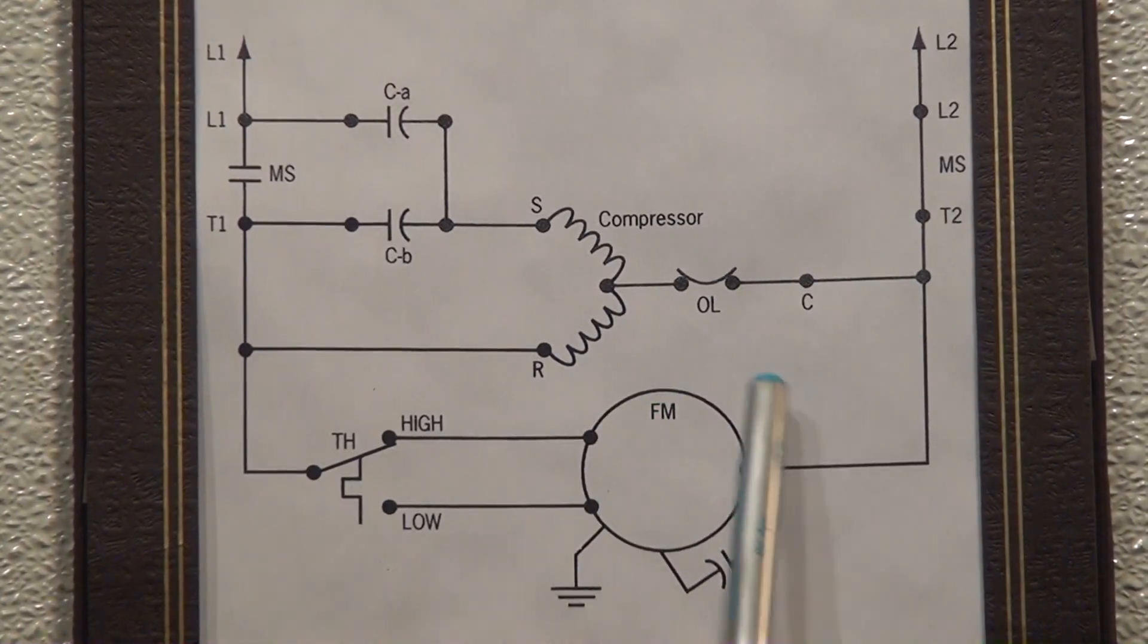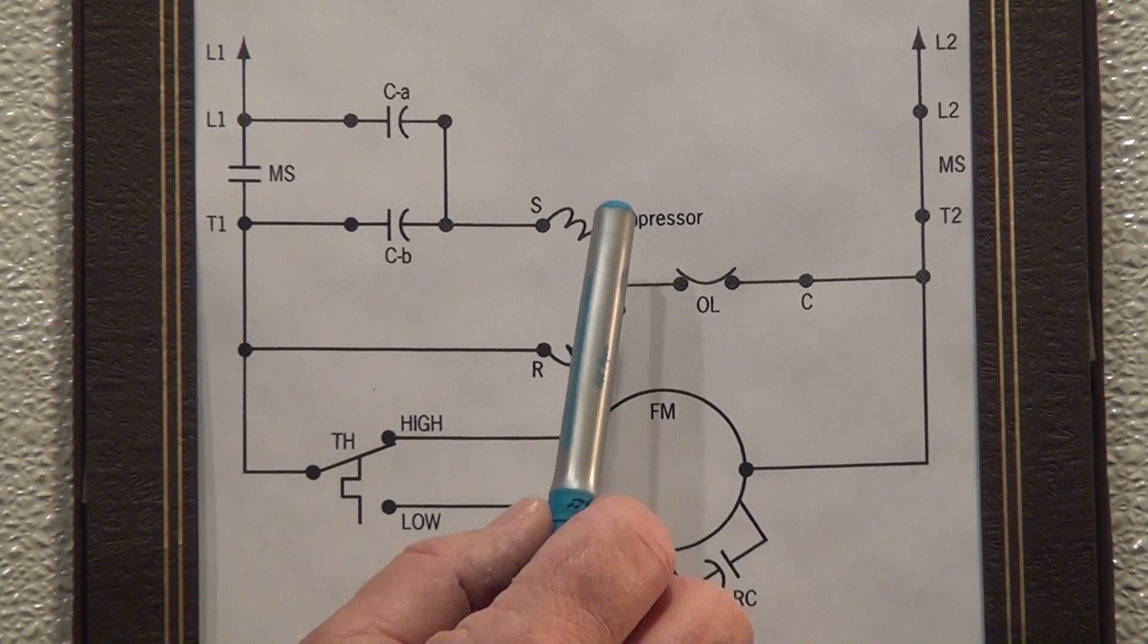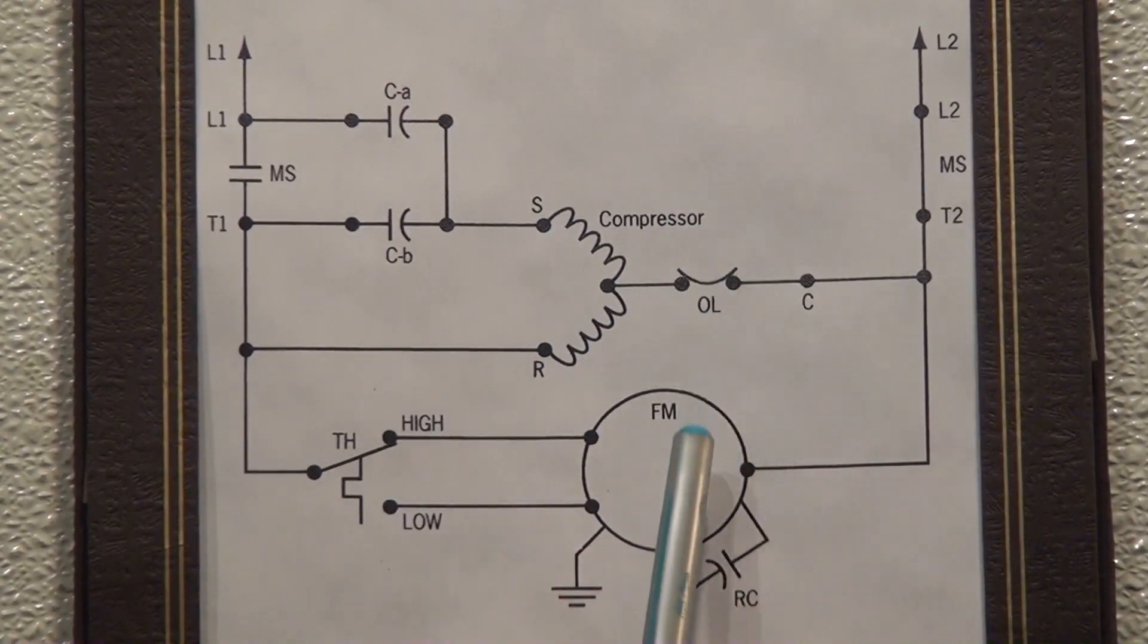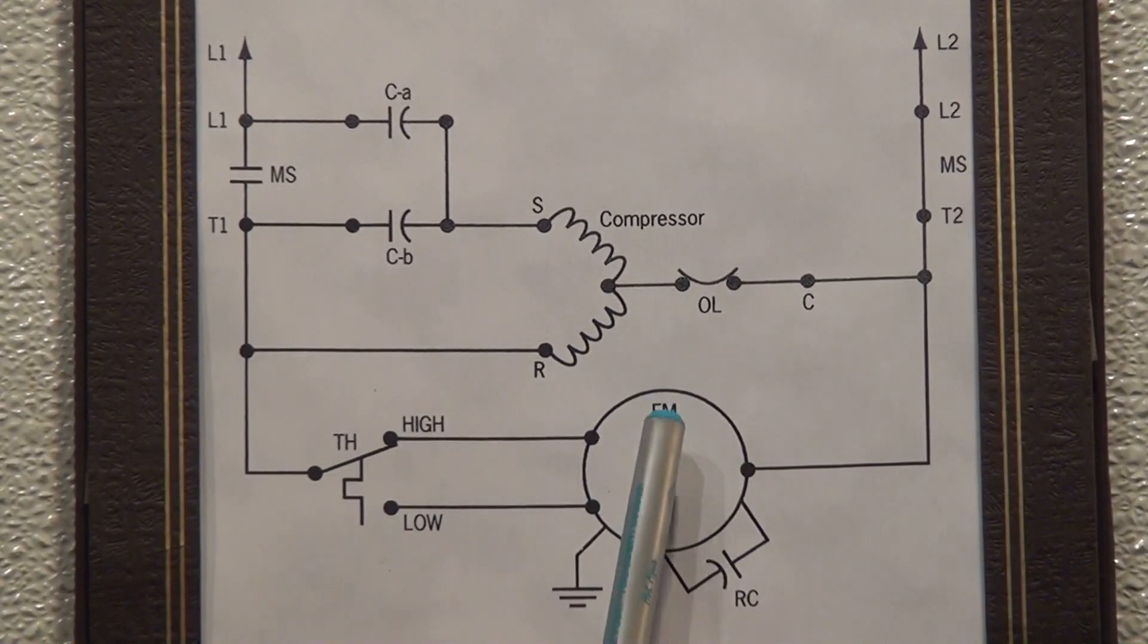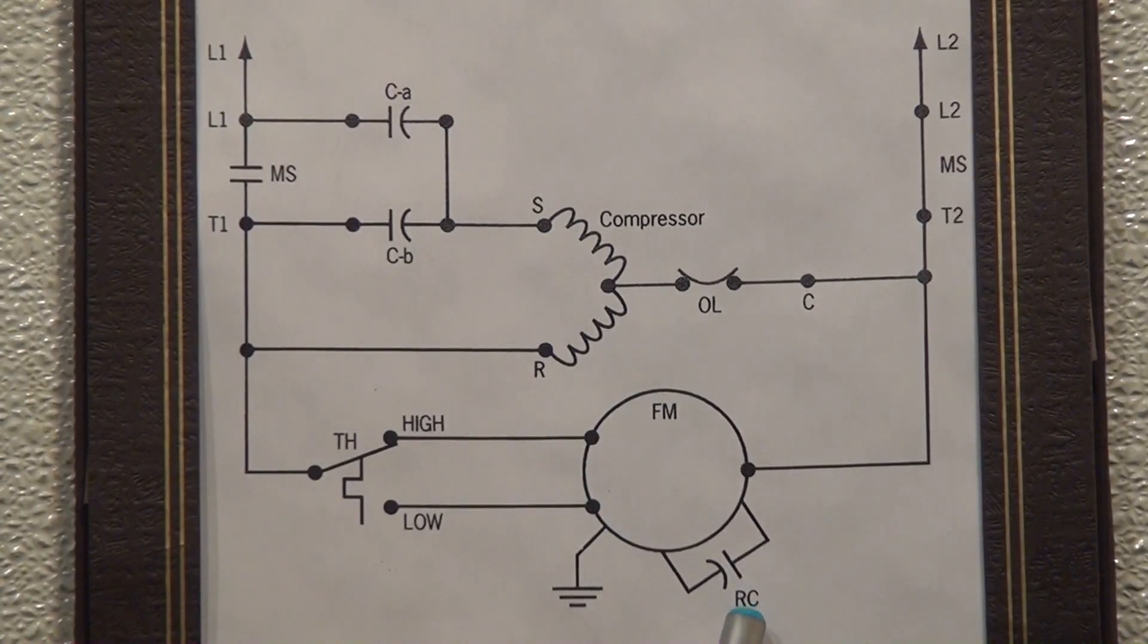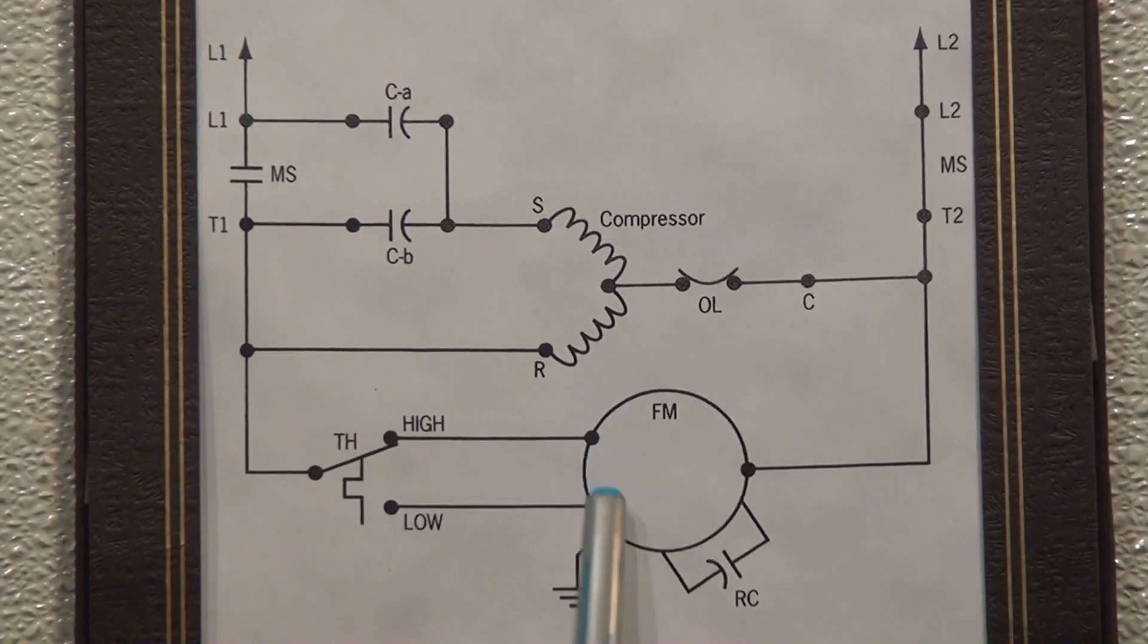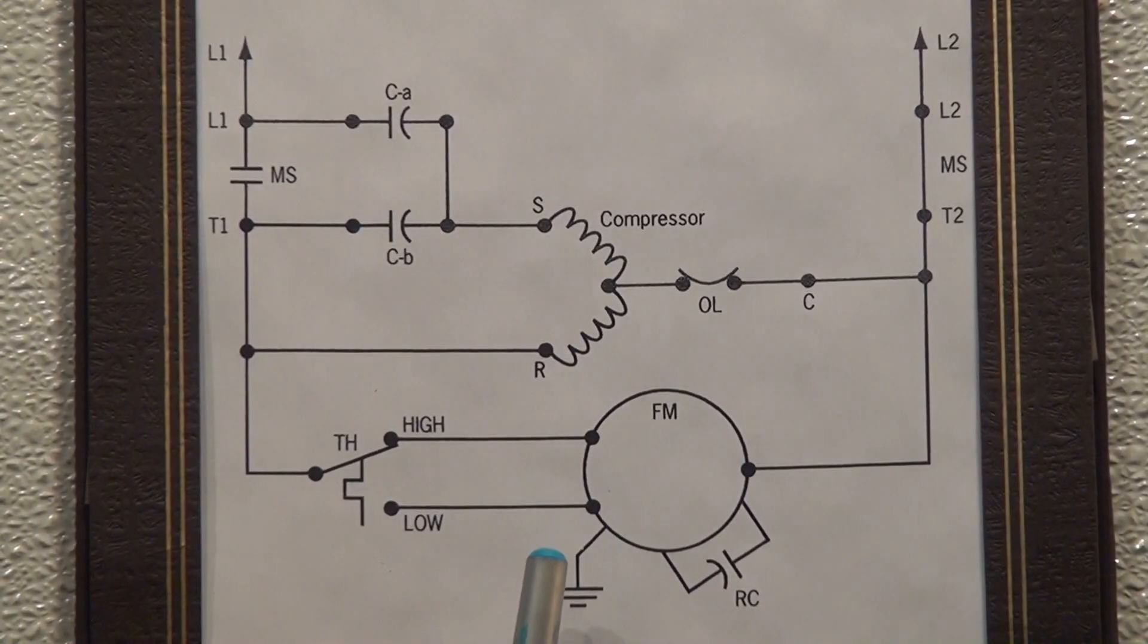Moving on down to this component here, we want to show this component even though it's not part of the problem. The symptoms that we're getting is that the compressor itself is trying to start and kicking off on overload and what we understand is that the fan motor FM in this case stands for outdoor fan motor. This particular outdoor fan motor uses its own run capacitor as you can see here, and this fan motor in our situation is running okay but it's part of the diagram so we want to explain it.